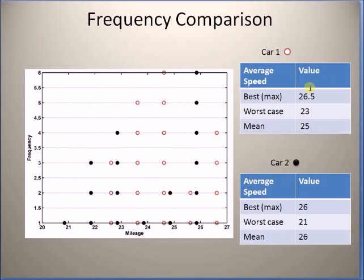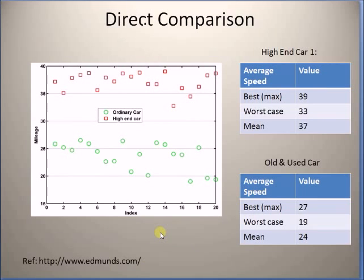For example, the red circles represent car 1 and black dots represent car 2. We can clearly see that the lowest value for car 2 is much lower than the lowest value for car 1, and the average of car 1 is close to 25 while that of car 2 is close to 26. We can actually extract a fair amount of information from these types of plots. We can also compare the mileage of two different types of cars by looking at time series plots, where the x-axis represents the index of the observation and the y-axis represents the mileage.